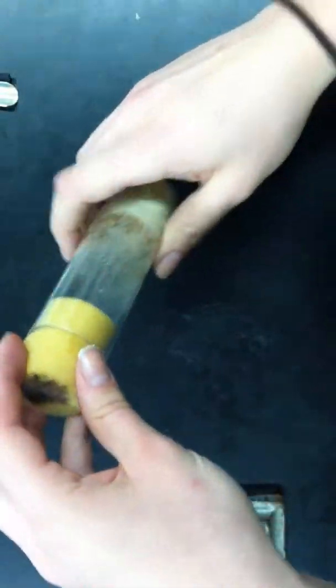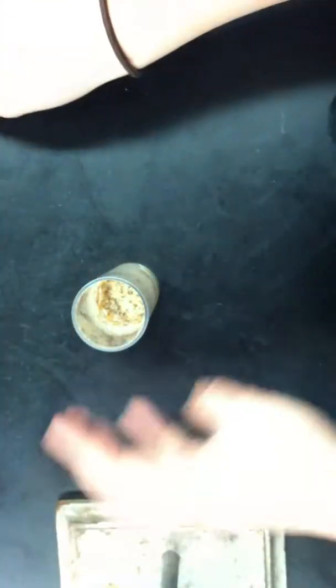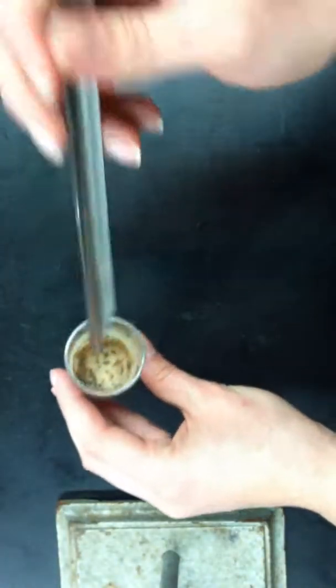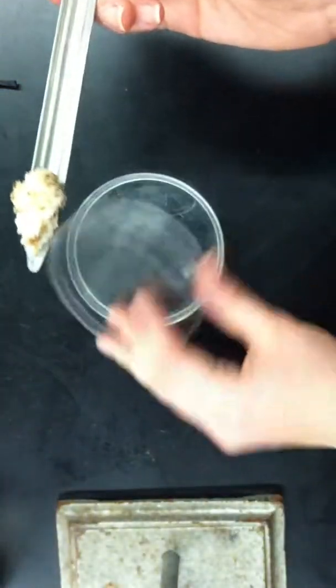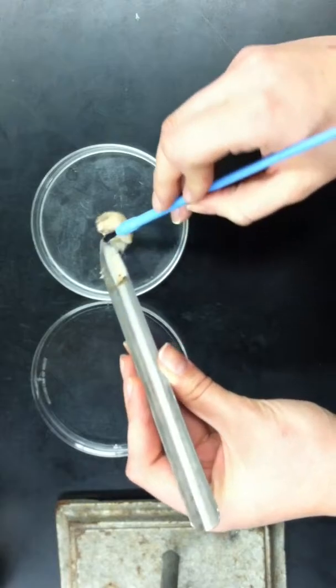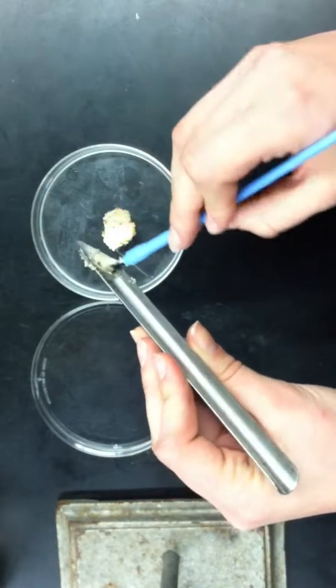So first, you're going to open the vial. And with the scoop, scoop out some of the media. Then you take the Petri plate, and with the thicker side of the Petri plate, you can use the paintbrush to help you. Just put the media in a clump in the center.